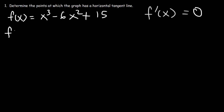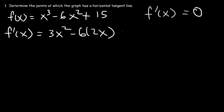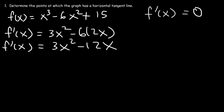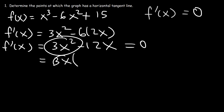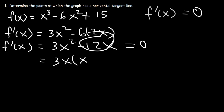Let's find the first derivative. The derivative of x cubed is 3x squared, the derivative of x squared is 2x, and the derivative of the constant 15 is zero. So f prime of x is equal to 3x squared minus 12x. Since we want a horizontal tangent line, we set this equal to zero and factor out the GCF, which is 3x. That gives us 3x times (x minus 4) equals zero.